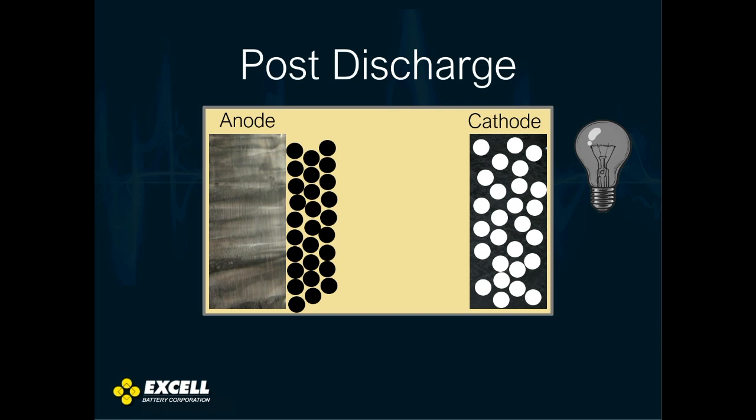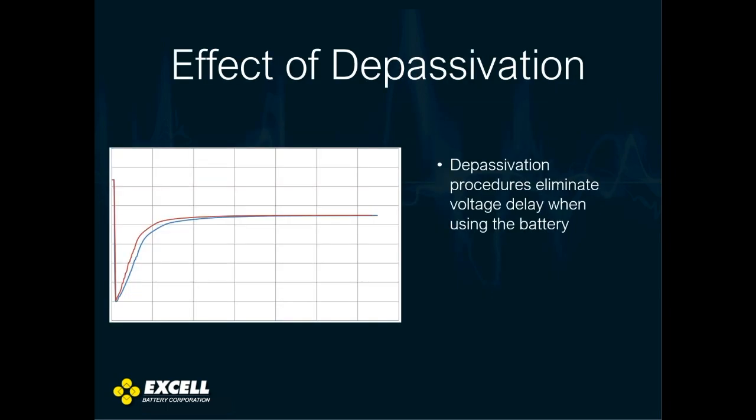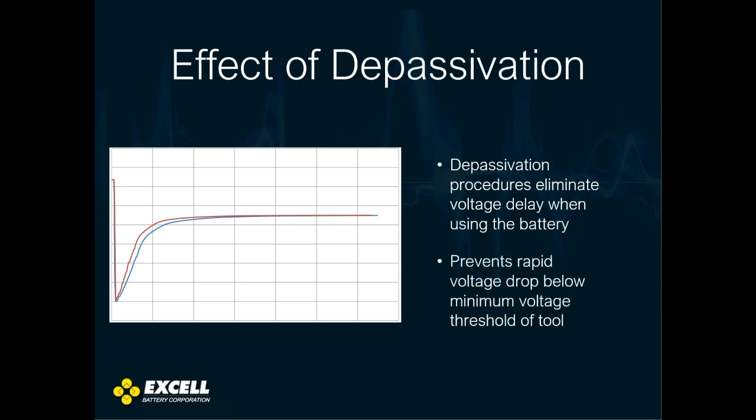So how do you depassivate a battery to make it easier to work with? Basically what you're trying to do is eliminate the voltage delay when using the battery — getting from the initial voltage drop over to the right, bypassing that big voltage drop. So when you start your tool or device, you don't have a massive voltage drop causing tool failure, brownouts, or whatever.